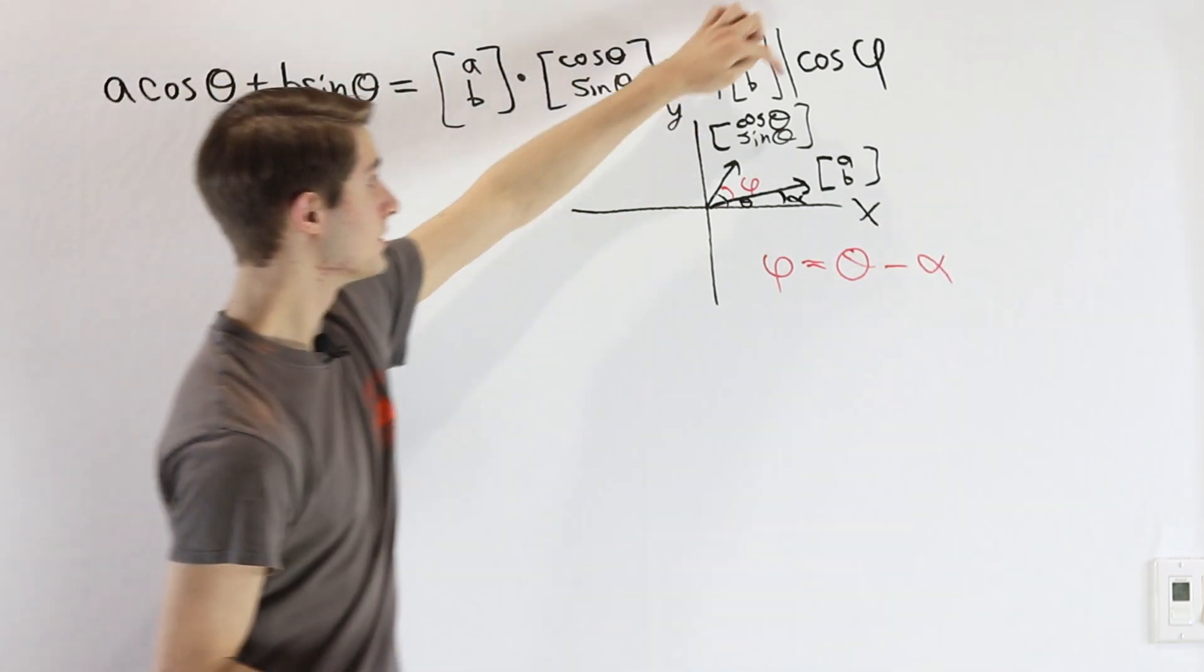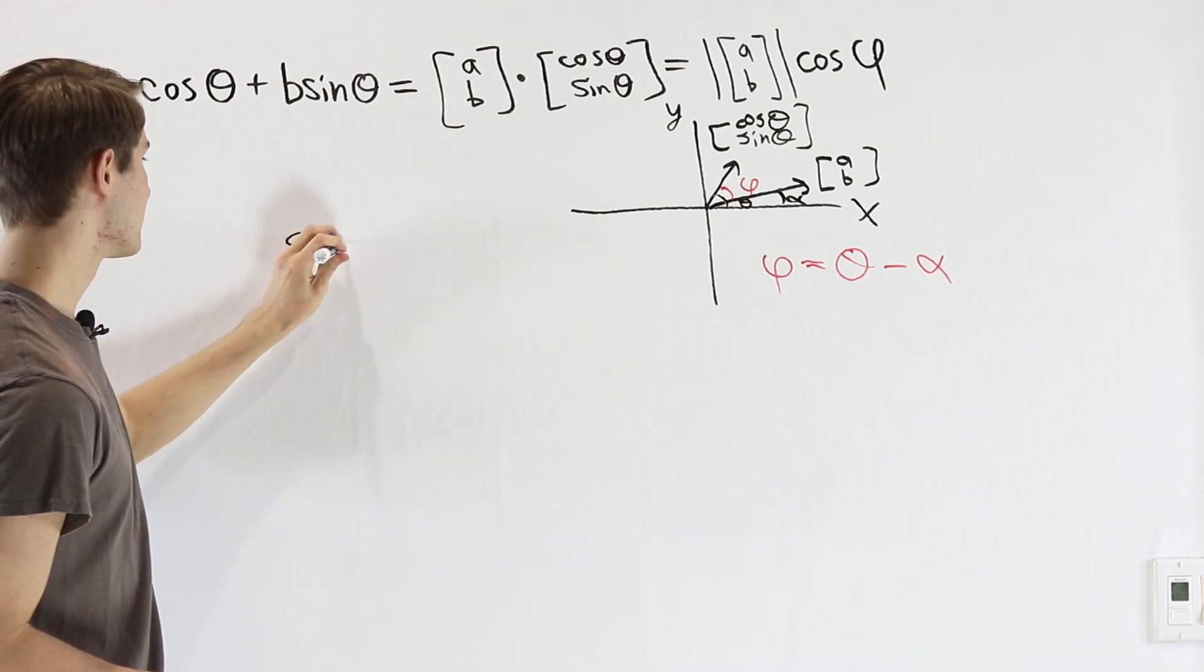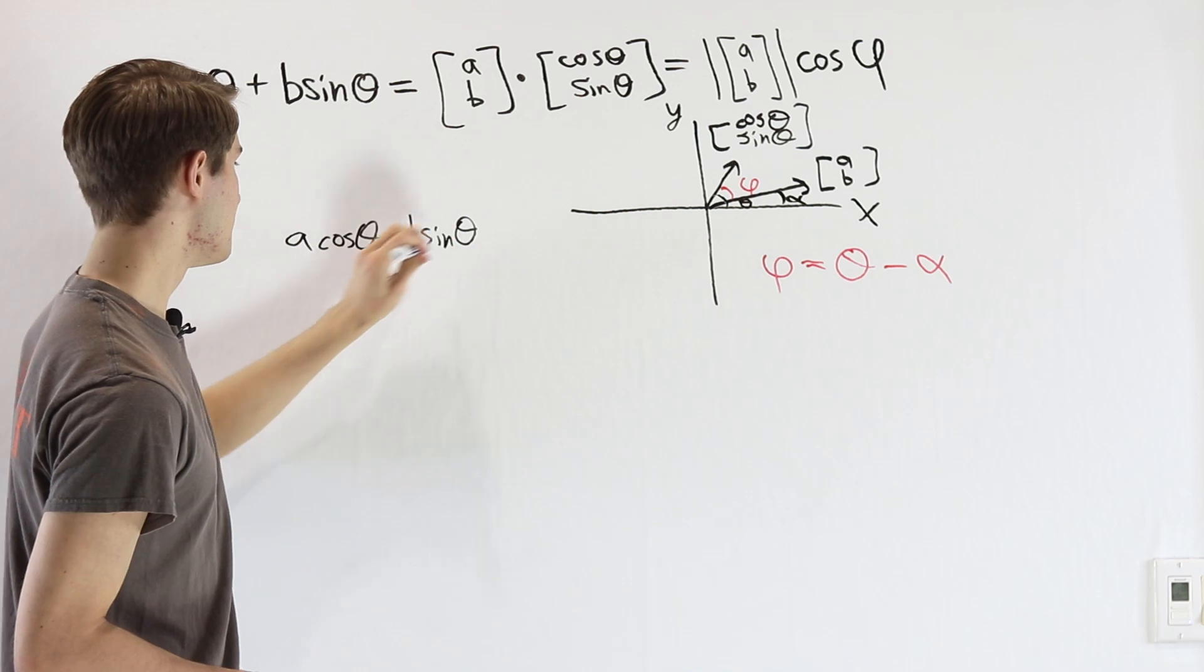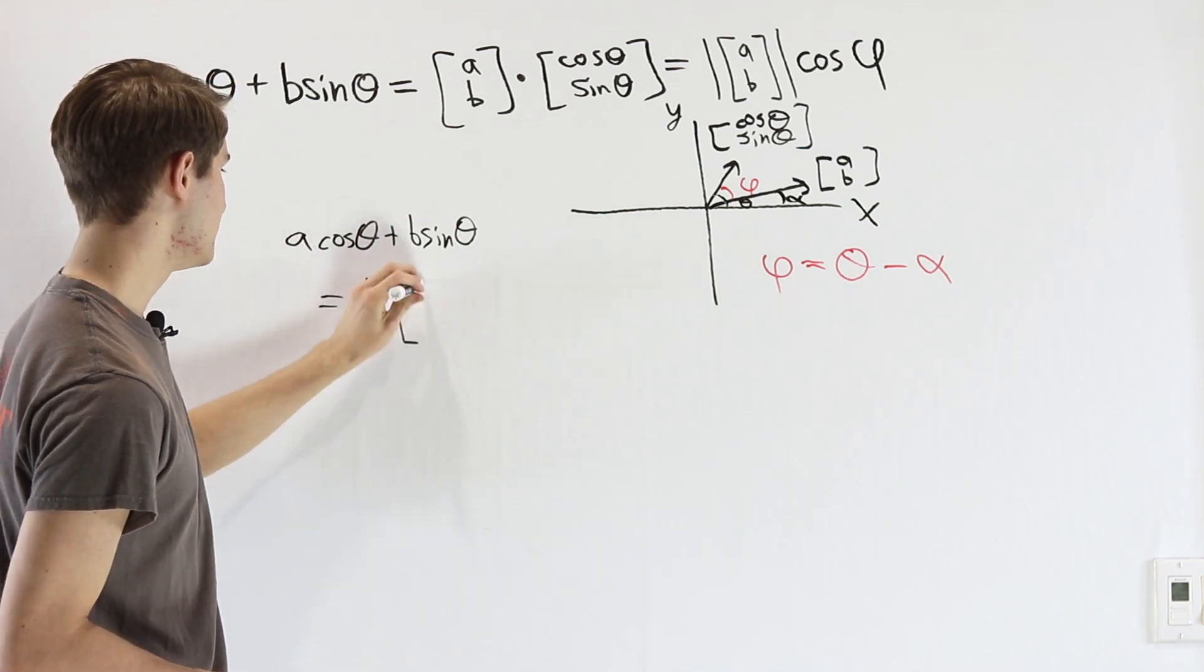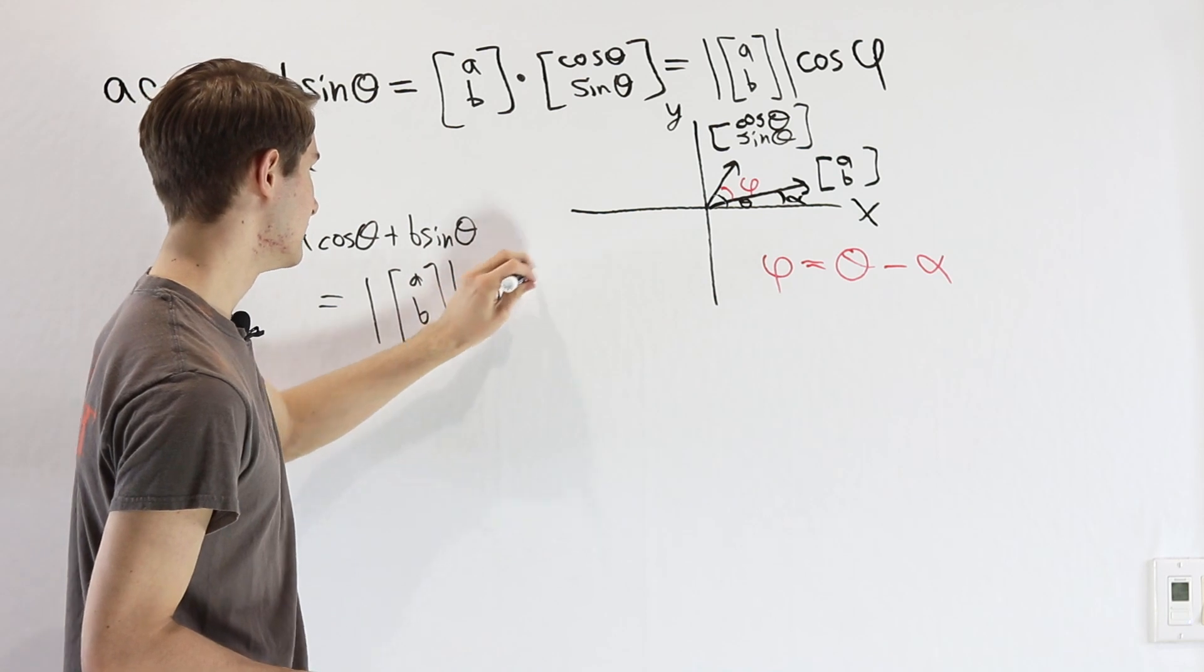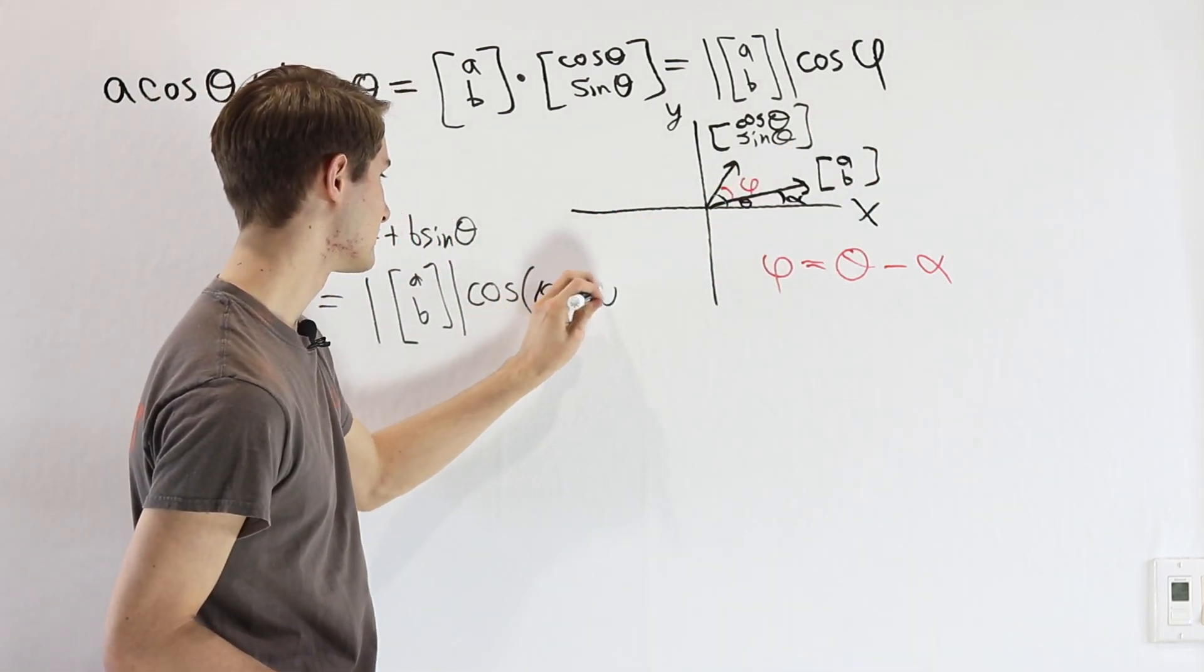Therefore, we can plug that in right to our expression here. We get A cos θ + B sin θ equals the magnitude of our vector [A, B] times the cosine of this angle right here, θ - α.